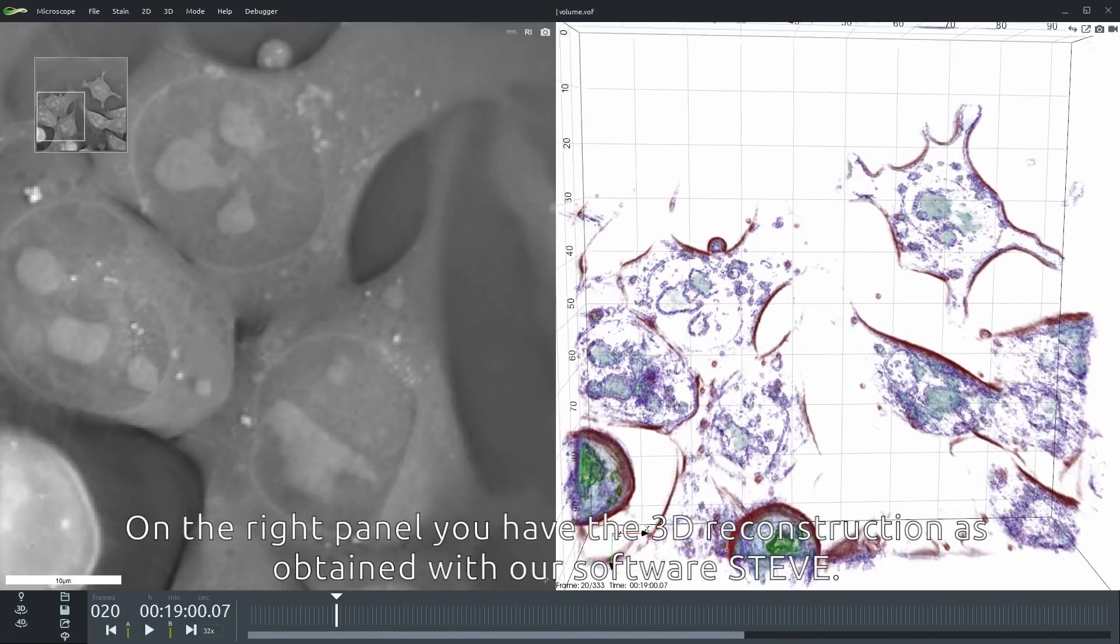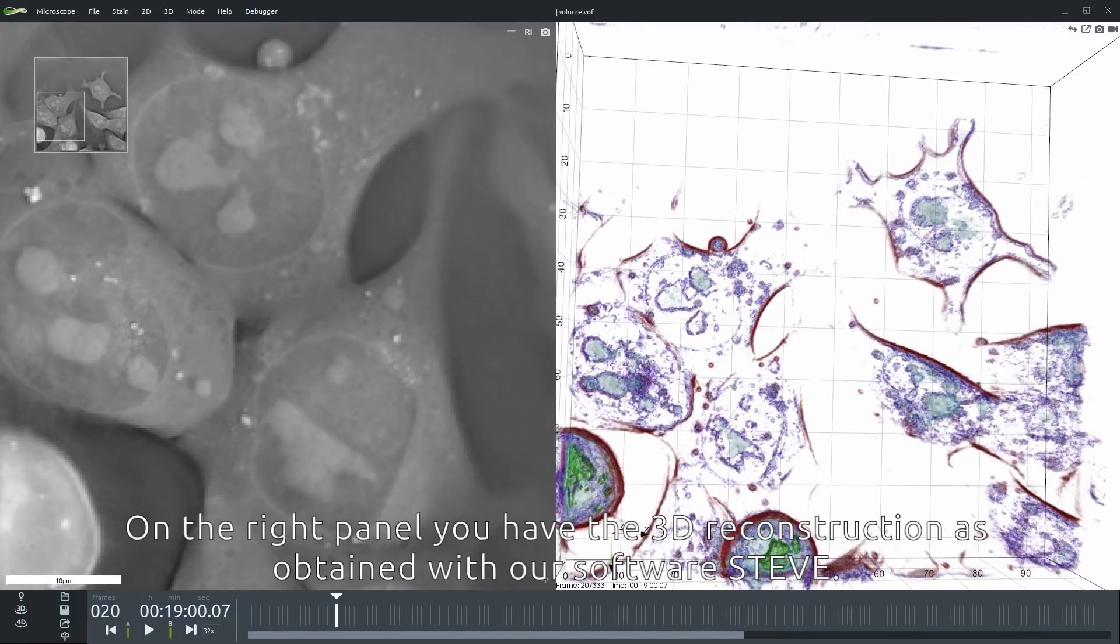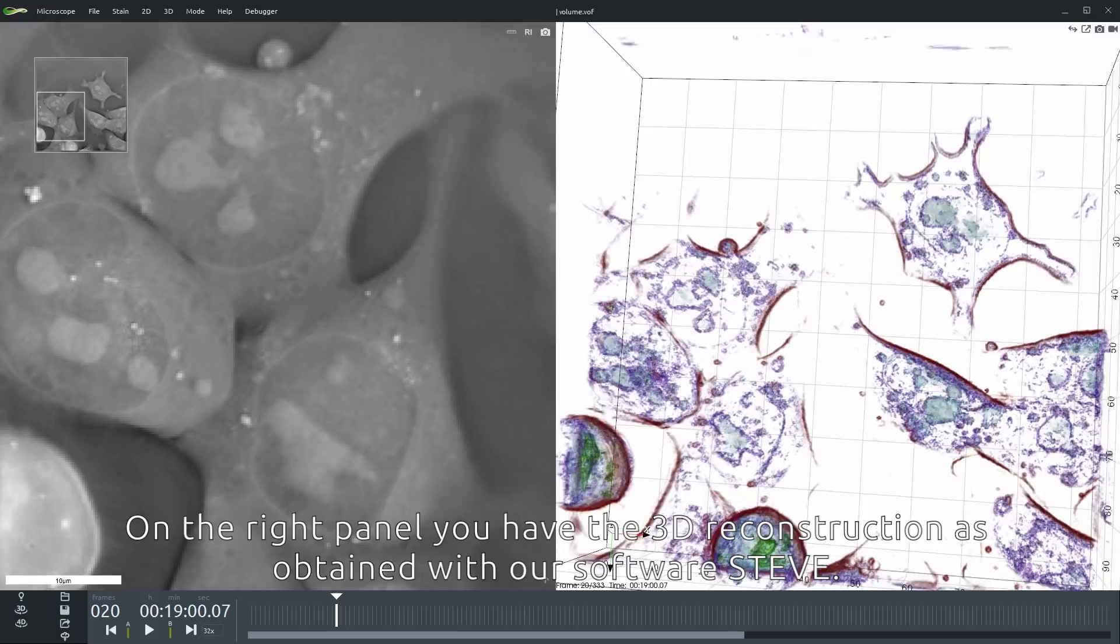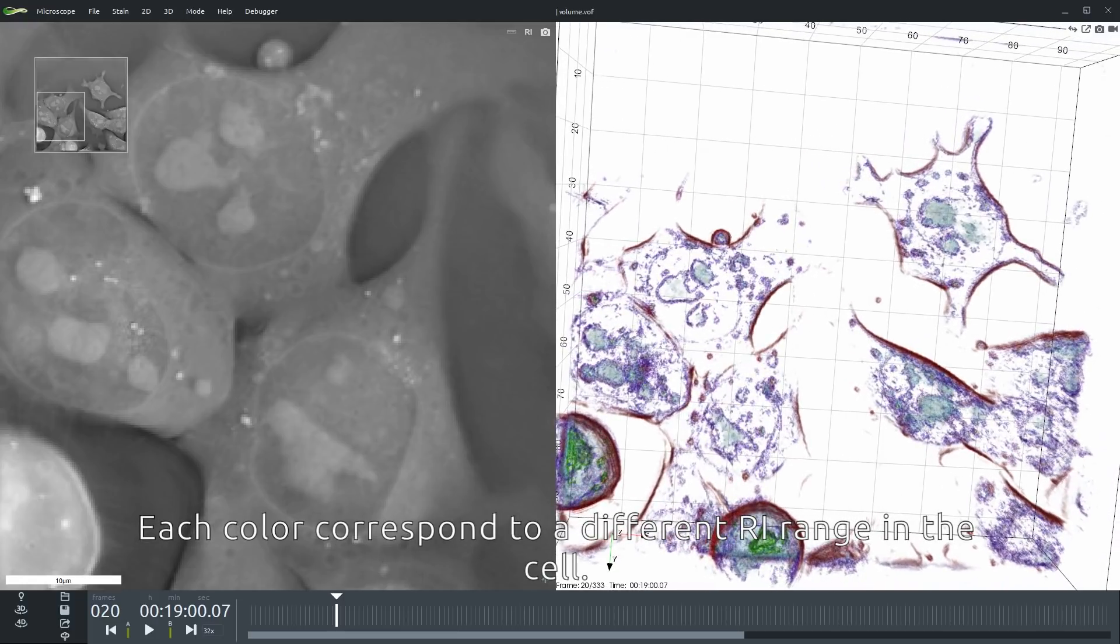On the right panel you have the 3D reconstruction as obtained with our software Steve. Each color corresponds to a different refractive index range in the cell.